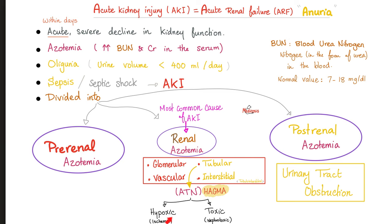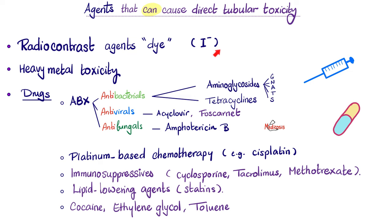Hypoxic and toxic. Toxic agents include medications or heavy metals. These include radiocontrast agents like iodine used in contrast CT scans, heavy metal poisoning, many antibiotics, platinum-based chemotherapy, immunosuppressive medications like cyclosporine, tacrolimus, methotrexate - but not sirolimus, because sirolimus is generally good for and spares the kidney. Also lipid-lowering agents like statins, cocaine, ethylene glycol, and toluene.